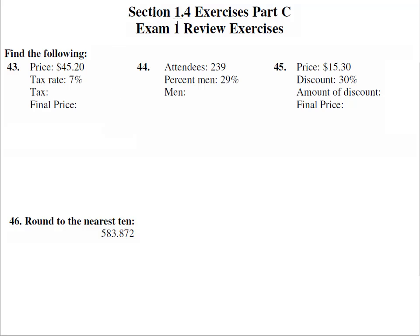Here we are in section 1.4 exercises part C, the exam 1 review exercises. We're reviewing for exam 1 here. Find the following: here we have a price and a tax rate. Now percents, what do we always do with percents? We multiply them, that's right. So we've got to take 7% of that $45.20.